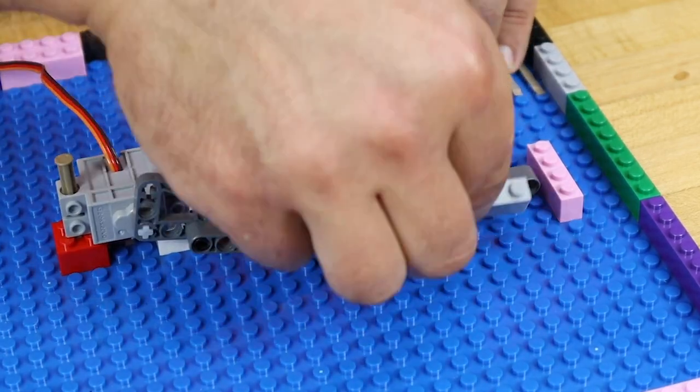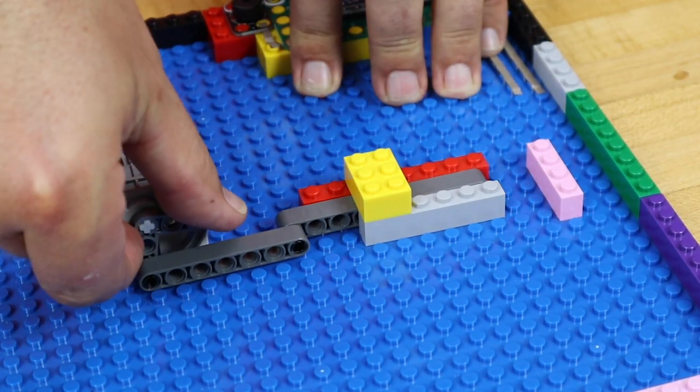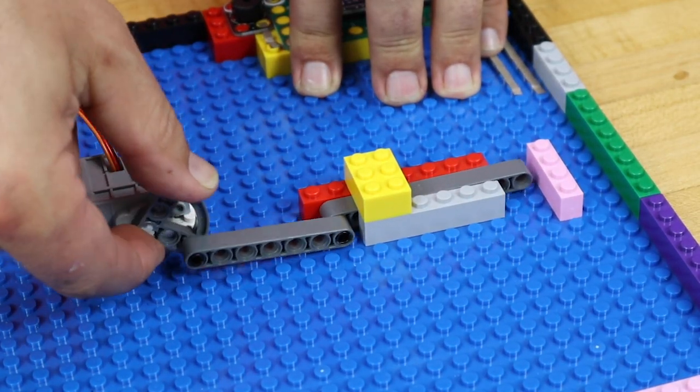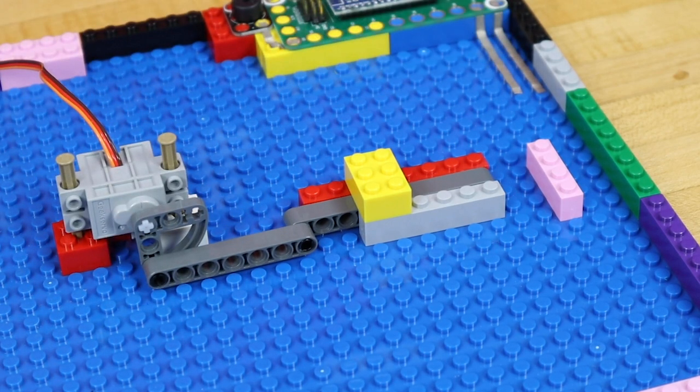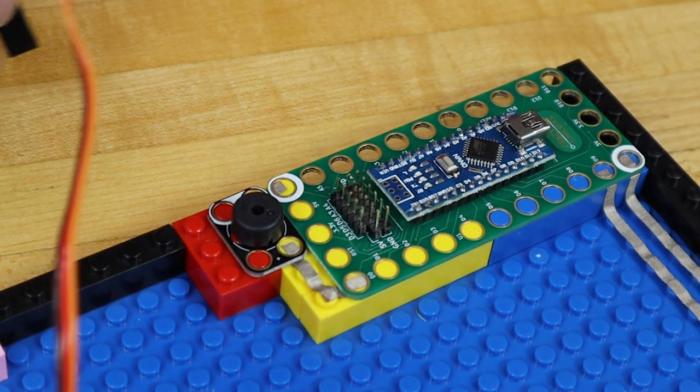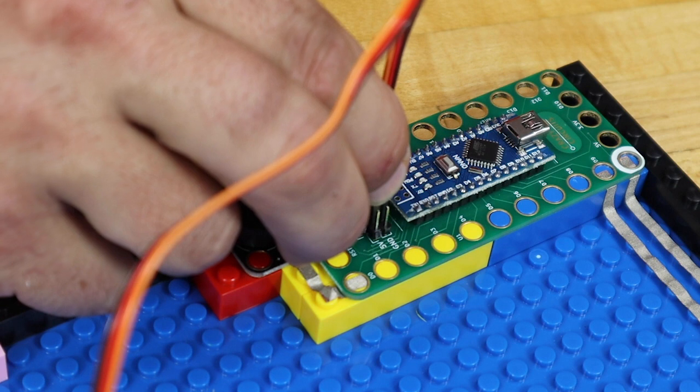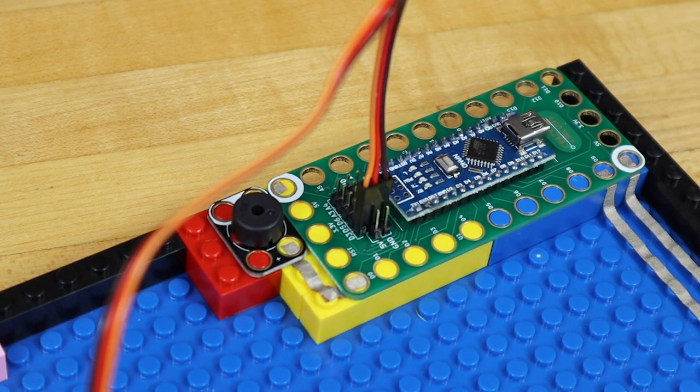Surround the arm with more LEGOs to build a guide track. Plug the servo into the D3 header pin with the orange signal wire towards the outside of the board.